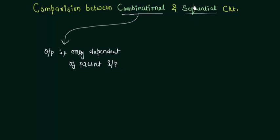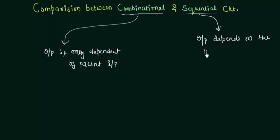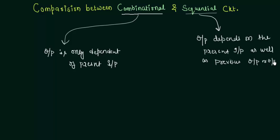The sequential circuit is just the opposite. The output depends upon the present input but also upon the previous output or outputs. So in a sequential circuit, the output depends on the present input as well as the previous output or outputs. This is the basic difference between combinational and sequential circuits.